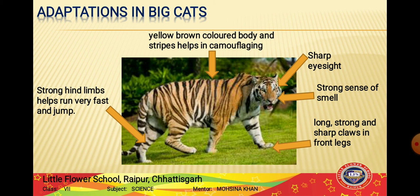Big cats have very sharp eyesight, allowing them to locate their prey from a great distance. They can also run very fast. Their front leg claws are very long, strong, and sharp, which helps them easily catch and hold their prey.